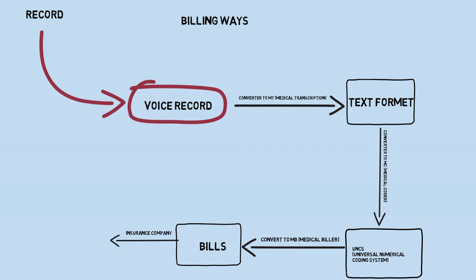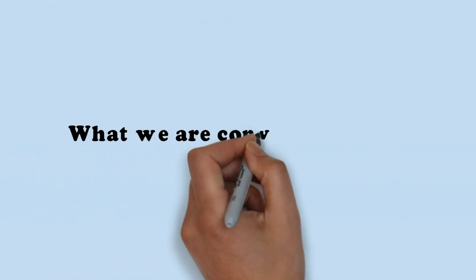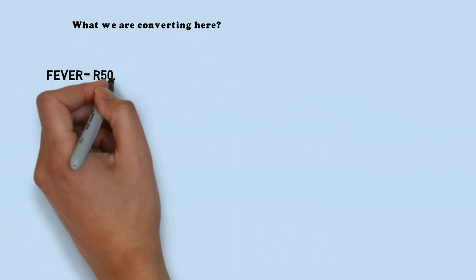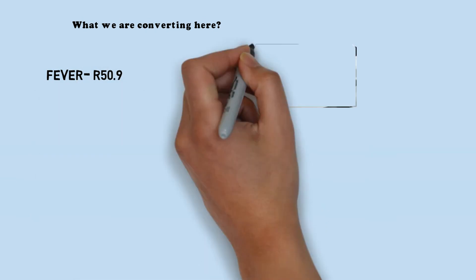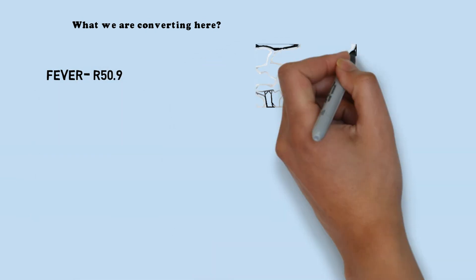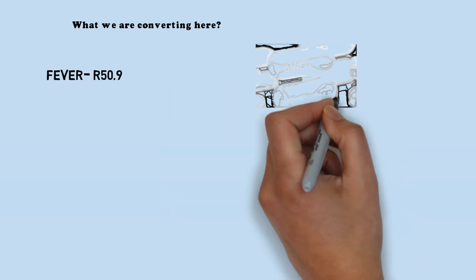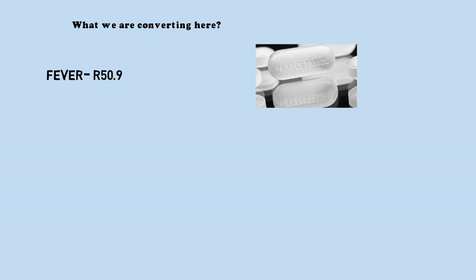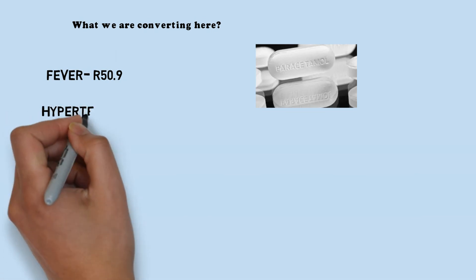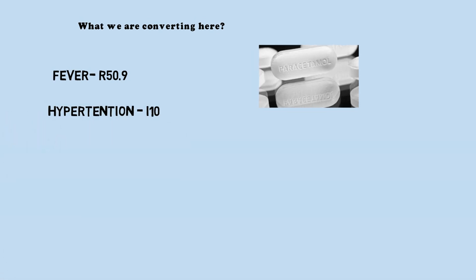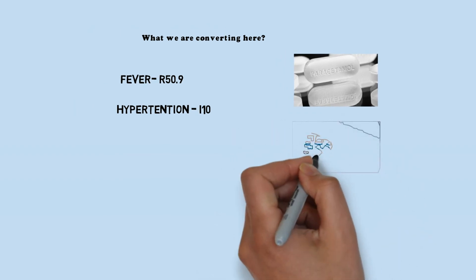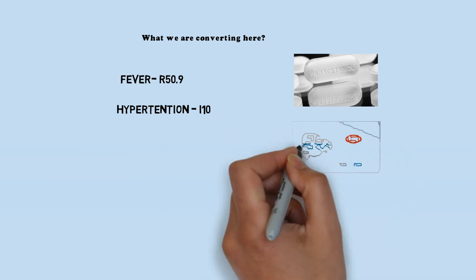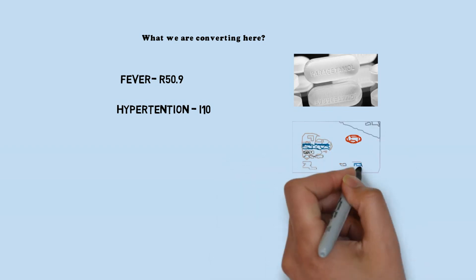Our job is to convert the text — which is basically the prescription — into a universal numerical coding system. We convert managed diseases and managed injuries into codes. For example, if a patient is suffering from fever and is prescribed paracetamol, we convert that into R50.9 — that's our job, finished. For example, if a patient is suffering from hypertension and is prescribed amlodipine, we convert that into I10 — that's our job, finished.